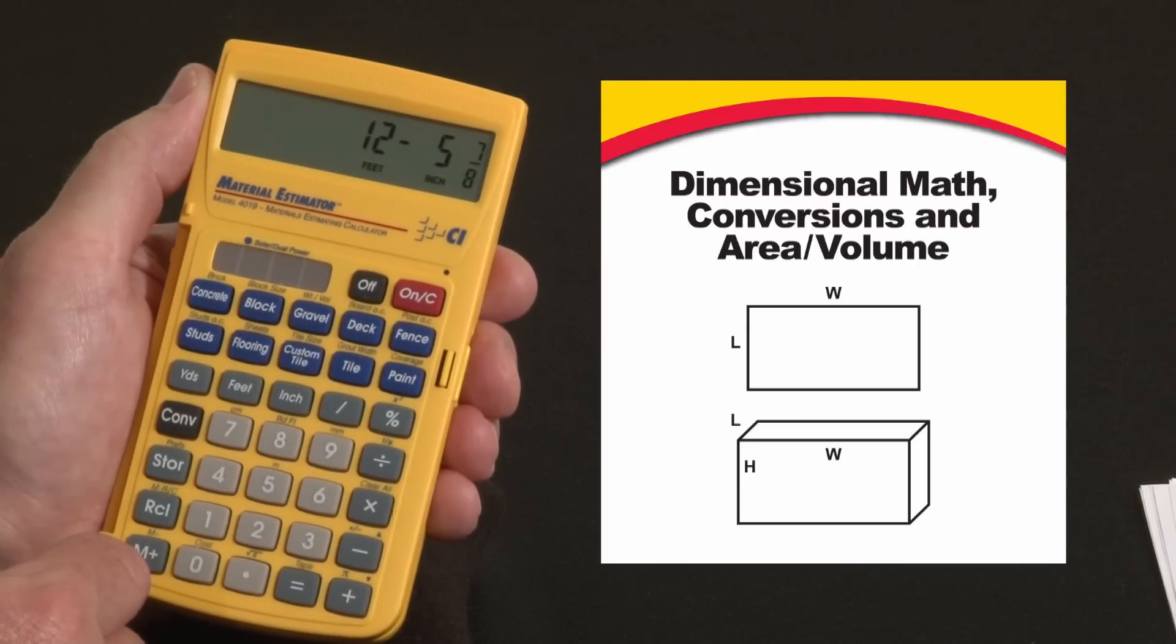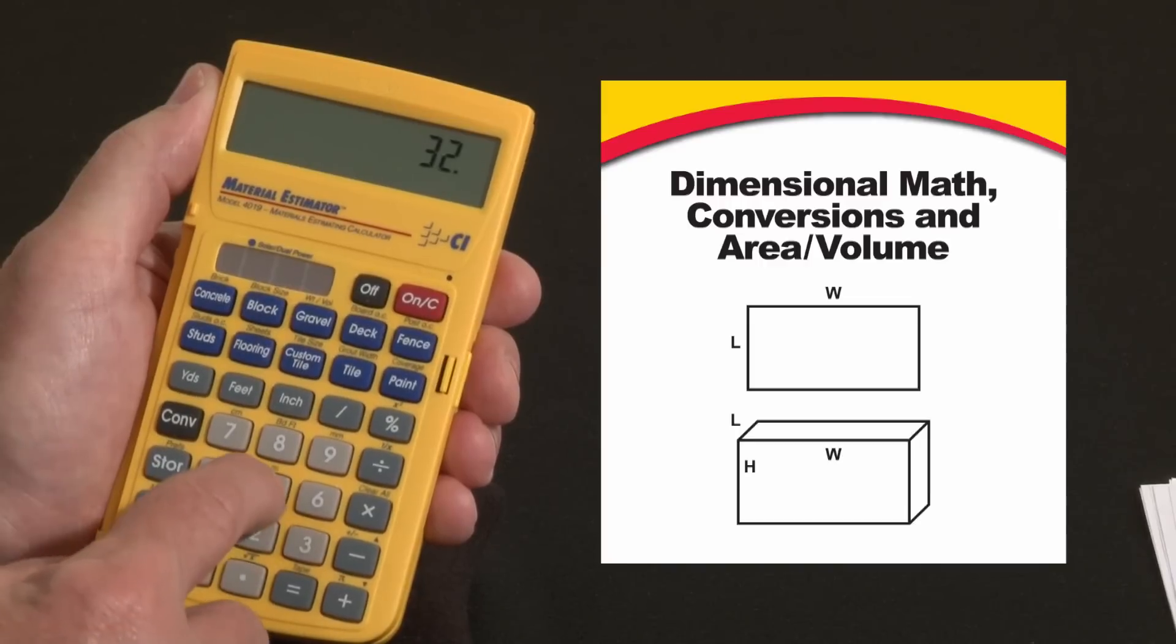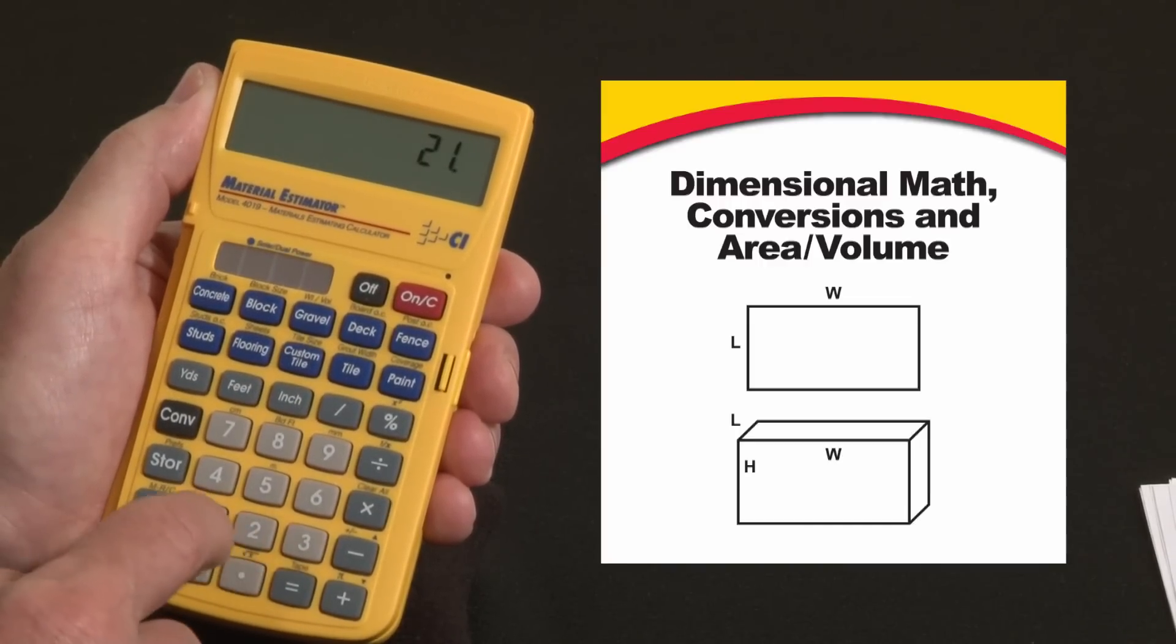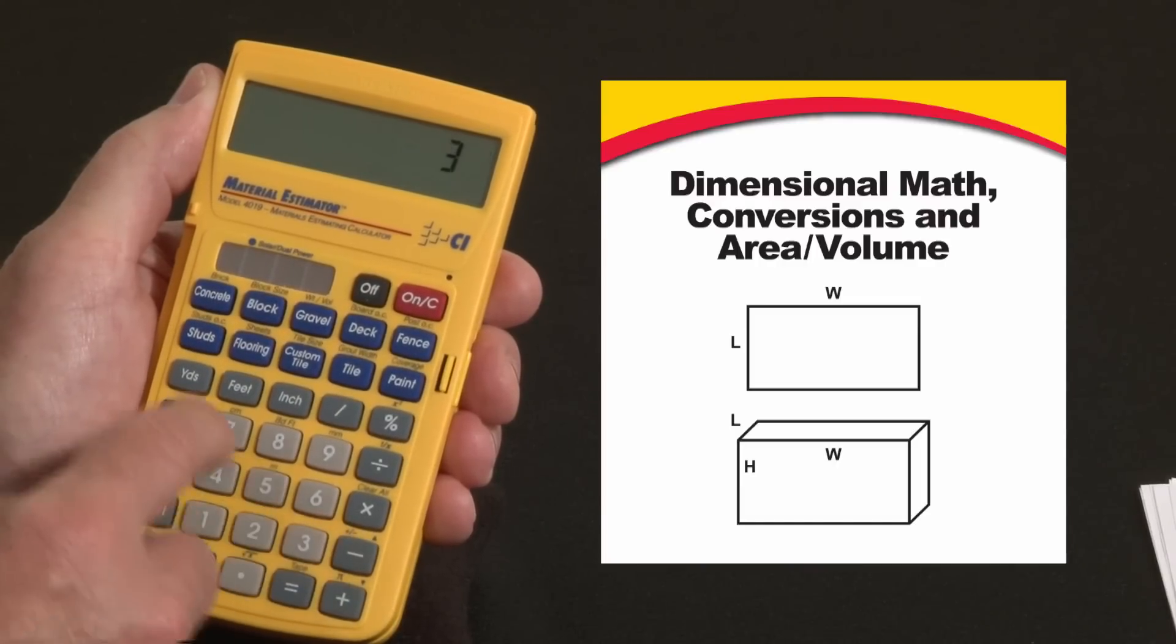But you're not locked into this format. You can combine decimal formats, plus thirty-two point five inches, plus twenty-one point one four feet, minus three yards.